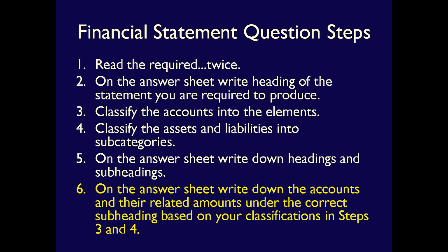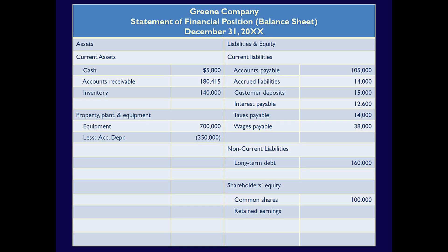Step 6: Write down the accounts and their related amounts under the correct subheading using the classifications you produced in steps 3 and 4. The trick is to remember the order. Since we're using the North American convention of order of liquidity, I've listed the current assets from cash to inventory. Notice that I've omitted prepaid insurance because the balance was zero. I've also listed the liabilities in order of liquidity — from those settled first to those settled last. In cases where the order is not clear, I always list accounts payable and accrued liabilities first. Notice that retained earnings is still blank — we'll address that in a minute.